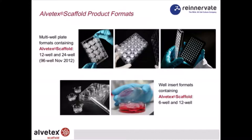There are various formats of Alvitex scaffold products currently available, including plate formats in 12-well and 24-well versions. Later this month we will be releasing the 96-well format. In addition, we have a selection of well inserts — the 6-well and 12-well inserts. The 12-well insert has been specially designed to also fit into a 6-well plate, enabling a larger volume of medium to support the growth of cells in a smaller disc of Alvitex.